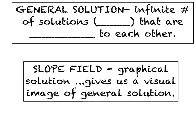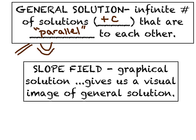We introduced a term called the general solution yesterday. The general solution was where we separated the variables, integrated, and solved for y — but we still had a plus C, some unknown constant. Because that C could take on any number of values, there's actually an infinite number of solutions, and that creates a family of solutions. All of those solutions are what we sometimes call parallel to each other — not parallel like two lines, but like two parabolas that never actually intersect each other.